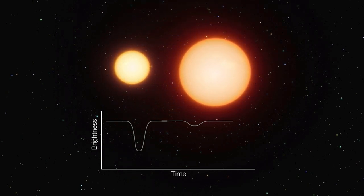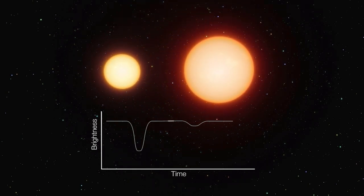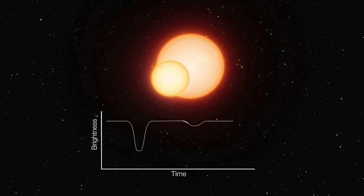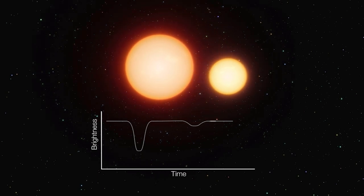They can even be false positives. Sometimes a dip in brightness is caused by something else, such as one star passing in front of another in a binary system.